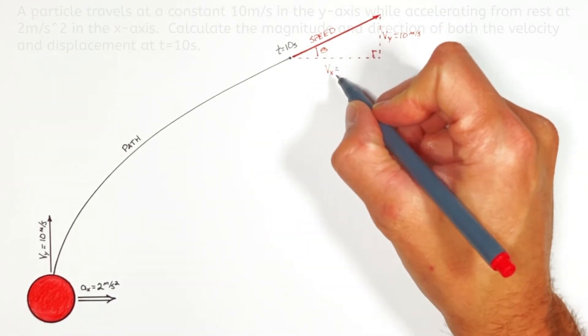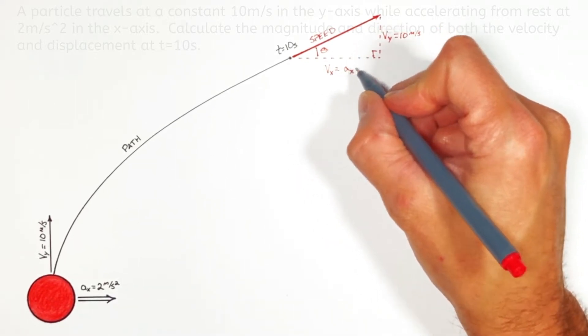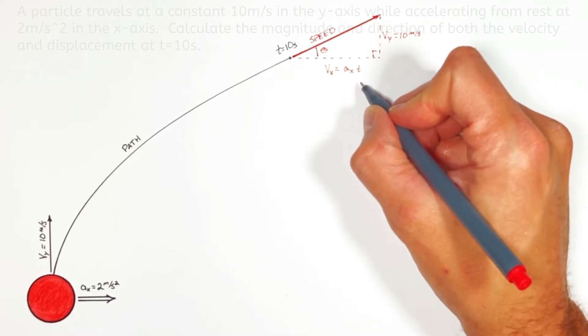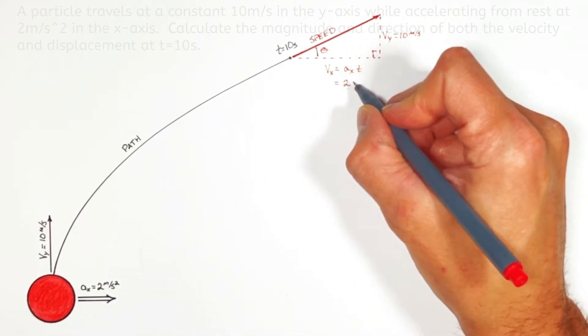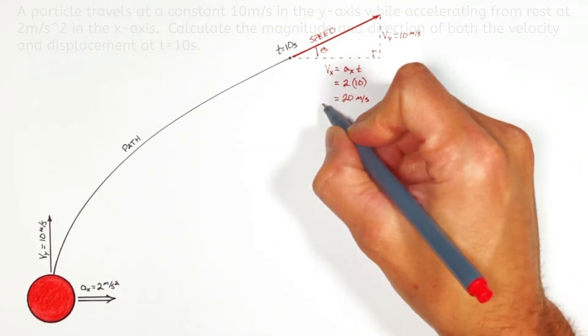So going back to the kinematic equations that means the velocity is going to be given by the acceleration in the x-axis multiplied by time. So plugging in our acceleration and time we'll get the velocity after 10 seconds is 20 meters per second.